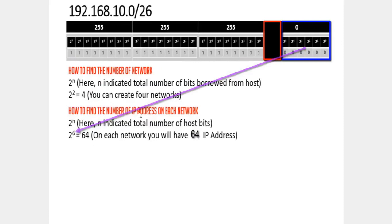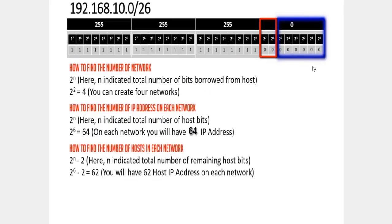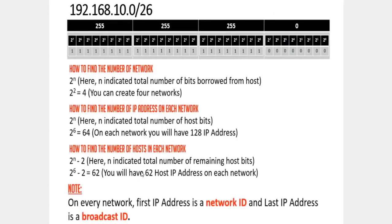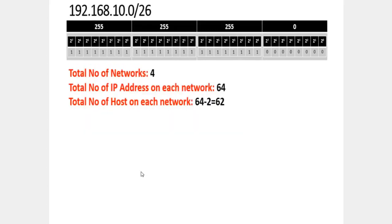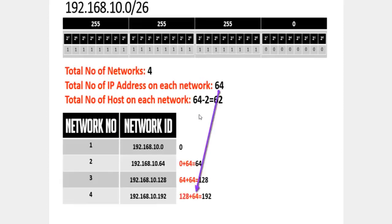To find the number of IP addresses on each network: 2 power 6 equals 64 IP addresses. The number of valid hosts in each network is 2 power 6 minus 2 equals 62. So number of networks is 4, number of IP addresses is 64, and number of valid hosts is 62.